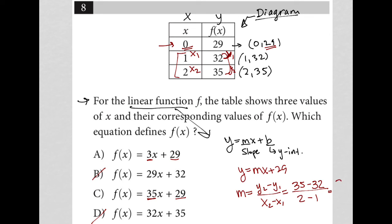So as assumed, the answer is 3. 35 minus 32 is 3. 2 minus 1 is 1. 3 divided by 1 is just 3 for slope. So m is equal to 3. And therefore, choice A must be the correct answer.